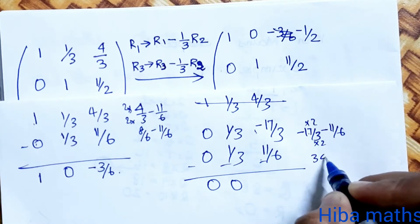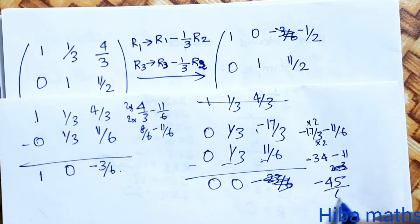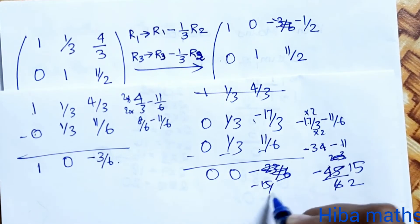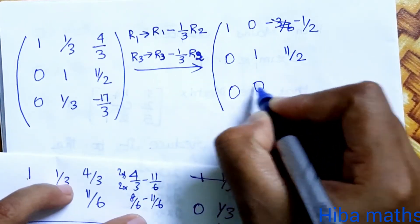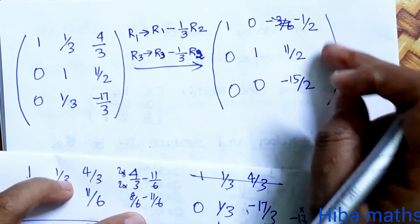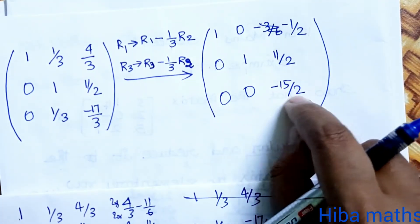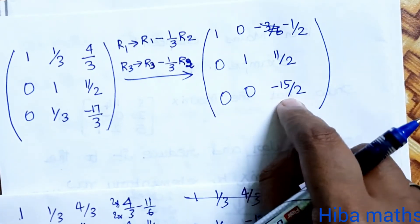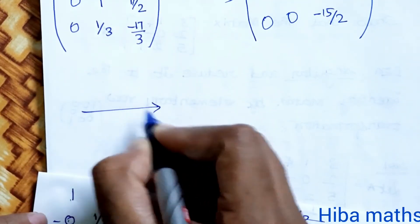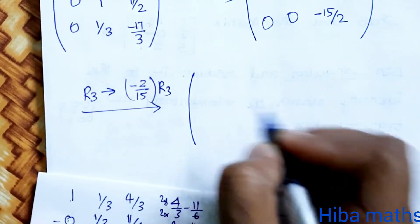Continuing the calculation: 17 times 2 equals 34. R2 minus 45/6. The last column becomes [0, 0, 1] after the operations. The final entry is minus 15/2, and multiplying by minus 2/15 gives 1. R3 changes to minus 2/15 times R3, completing the third pivot.